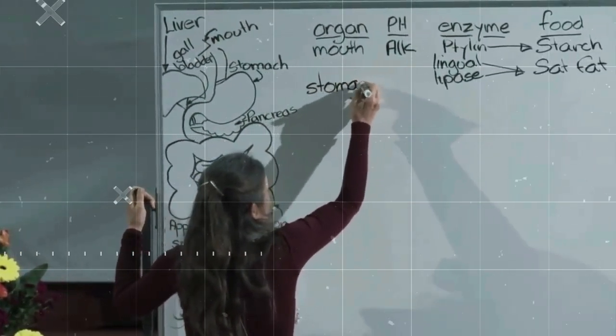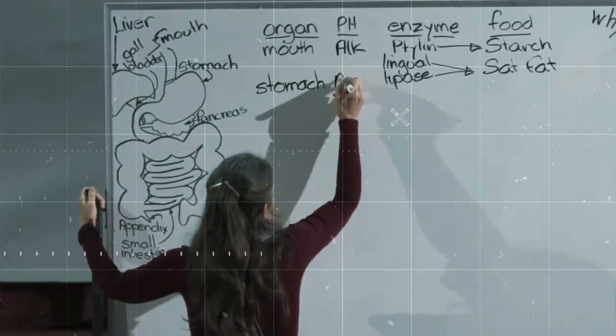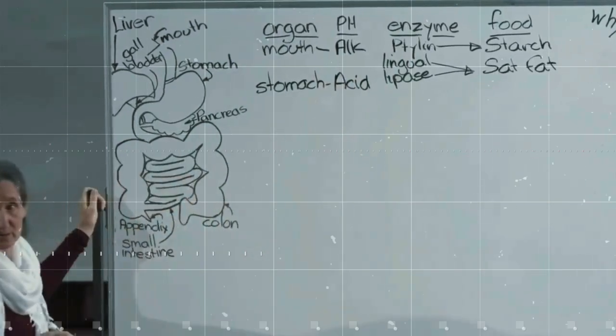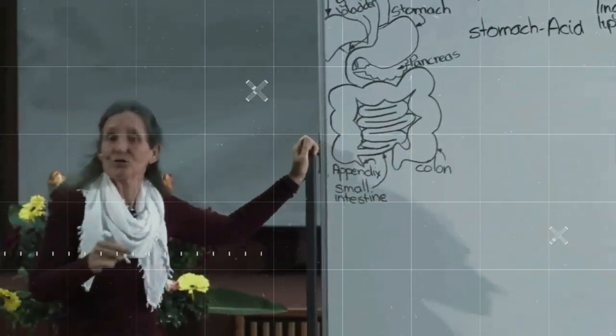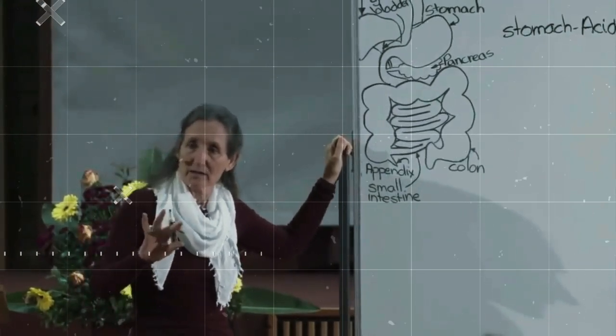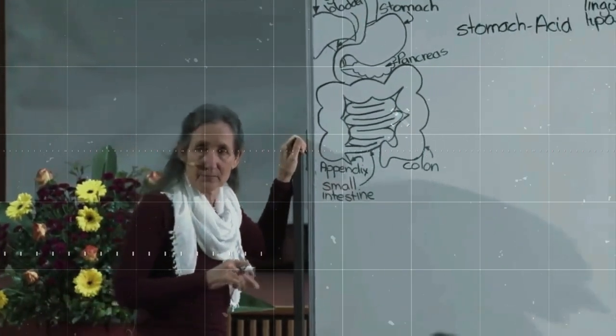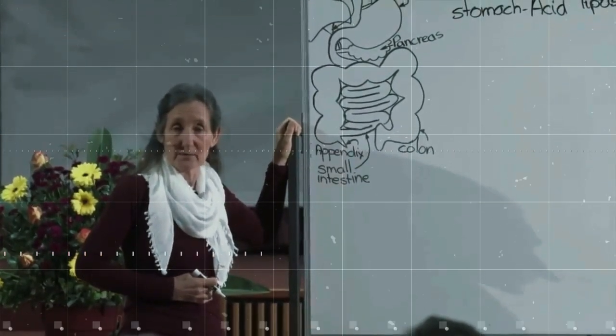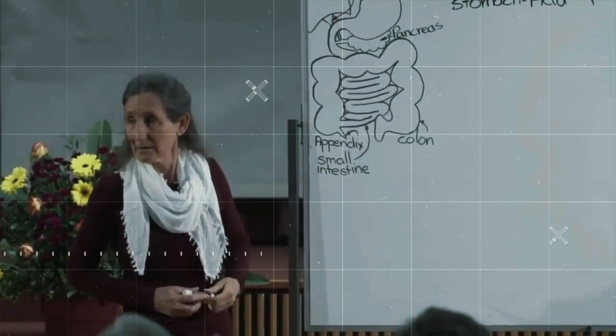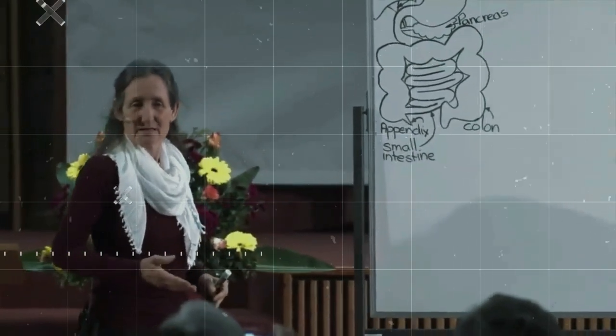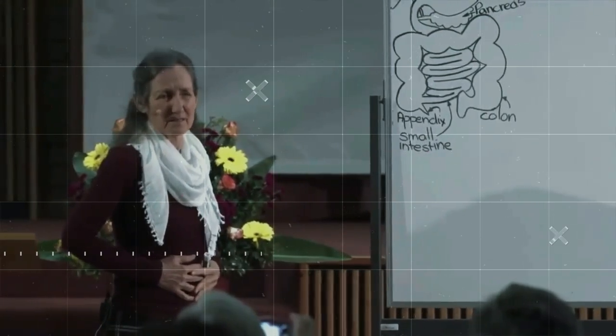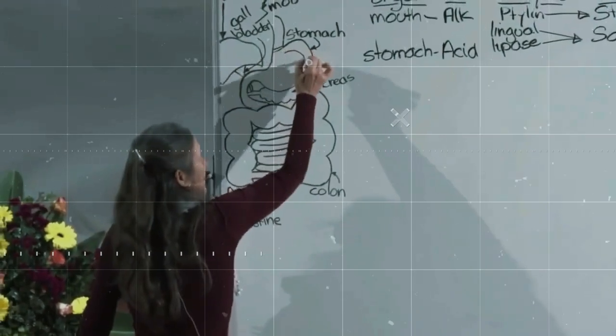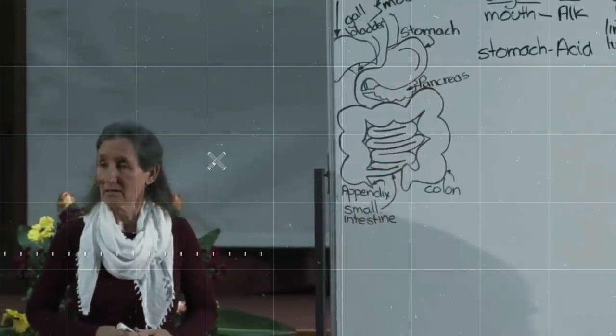So the stomach is an acid environment. In fact, that's the only part of the body that is acid. It's the only part of the body that should be acid. If someone says to me, I've got a very acid stomach, I say, fantastic. It should be. But how do you know it's acid? Well, it hurts. Well, it shouldn't hurt. We've got a thick mucosal lining on that stomach. So you shouldn't feel your acid. I can't feel my acid.